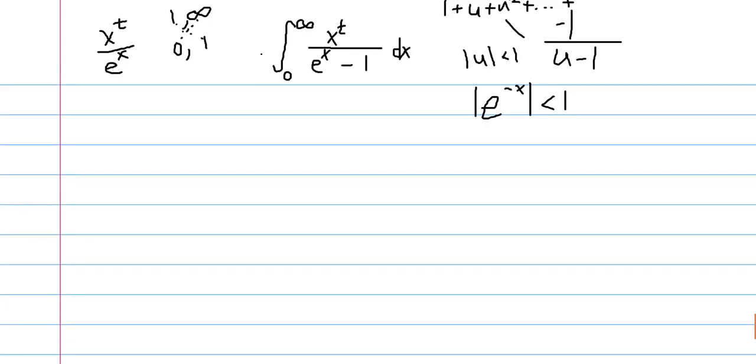So it would be possible that we could use e to the negative x. And in fact, that would get it into the 1 minus u form if we factored out e to the x here. And that would also get us our x to the x that we wanted from our gamma function.